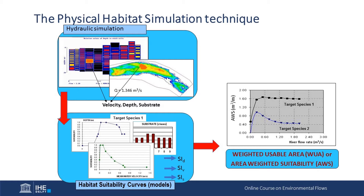In this plot, there is a black line for target species 1, and for flow 1.346 we can see one of these points. For different flows, the hydraulic simulation gives us all these variable results, and we can calculate the variation of the Weighted Usable Area with river flow rate. If we have different habitat suitability models for different species, we can calculate other curves for target species 2 or others. Different regulations or legal norms in different countries regulate how this information can be combined to get a minimum flow, high flow, or other values.